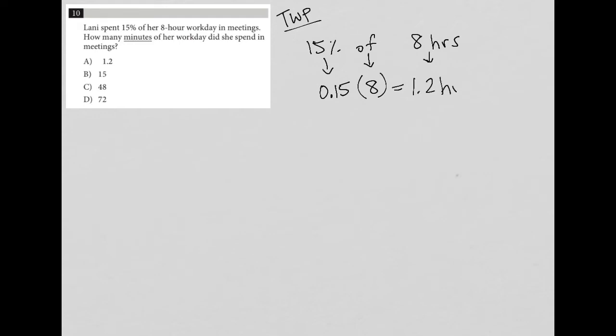And the unit is still hours, so 1.2 hours. The next part of the sentence says, how many minutes of her workday did she spend in meetings? So then I can automatically see that this 1.2 is a trap answer. So don't forget that units matter.